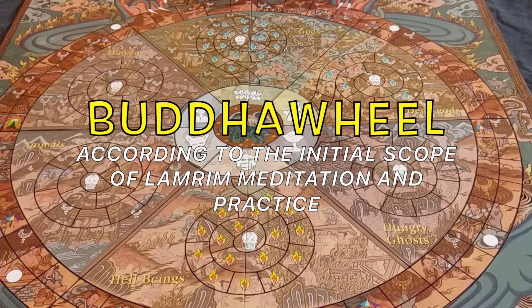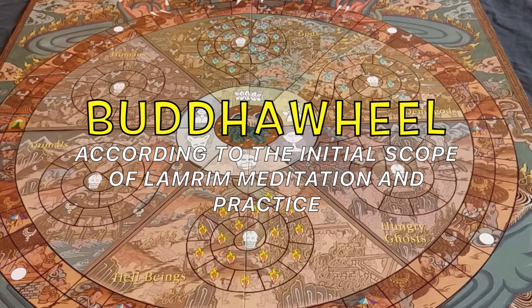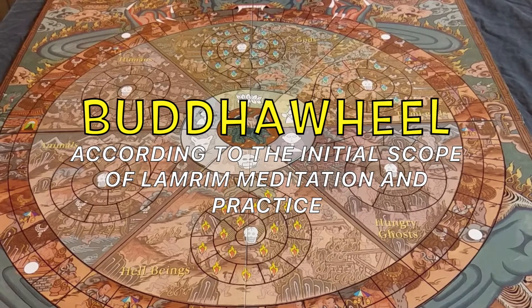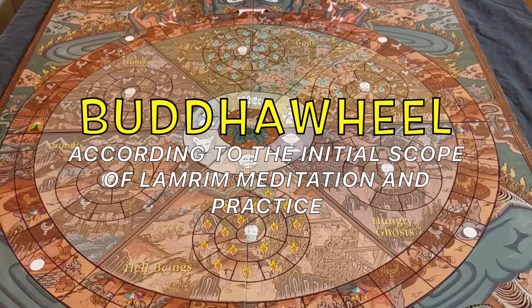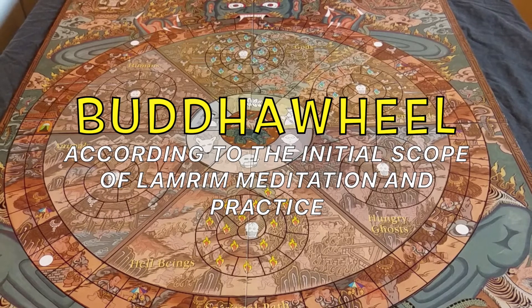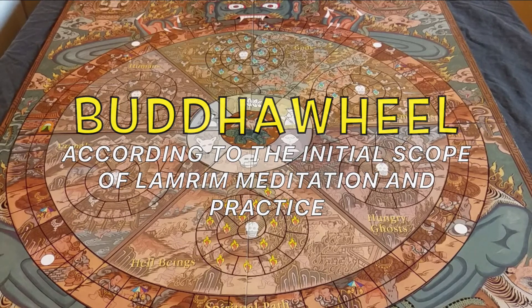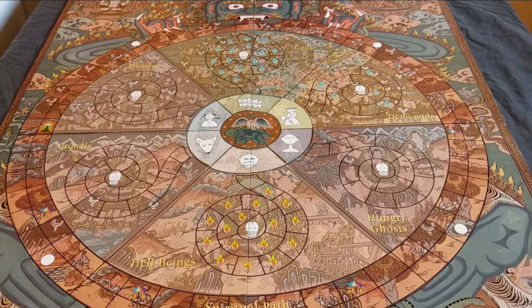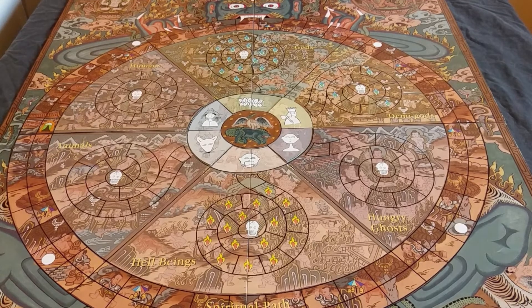Hello, welcome to the instruction of Buddha Wheel according to the initial scope of Lamrim meditation and practice. Basically looking at karma and refuge in Buddha's teachings, the teaching of the Wheel of Life which was an image created by Buddha, and awareness of uncontrolled circumstances and rebirth. These instructions will be quite slow, so feel free to learn from the instructions provided with the game, or do some breathing meditation during the slow bits.